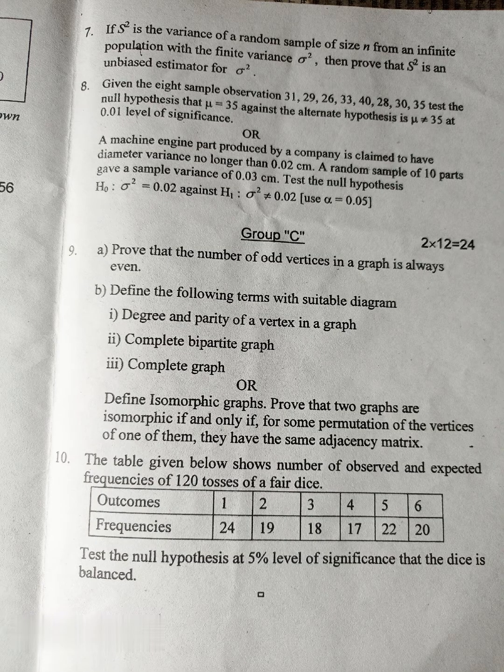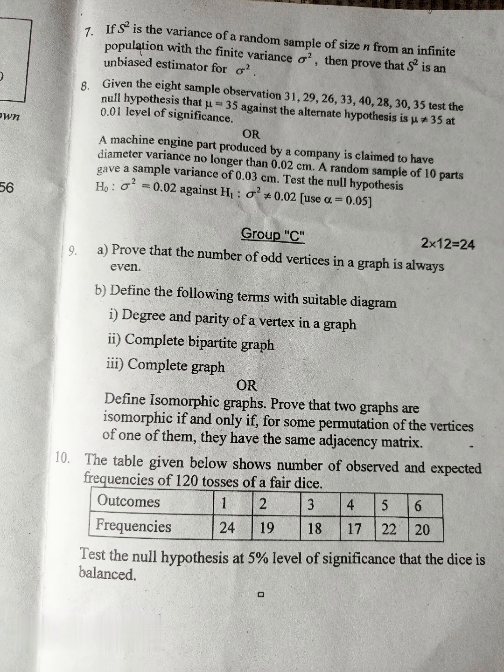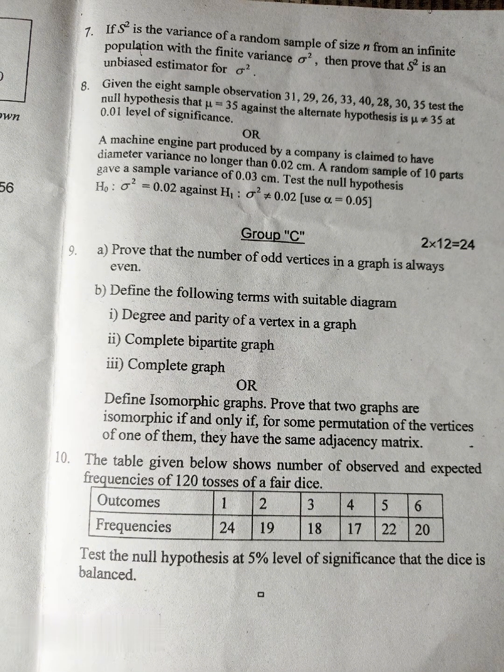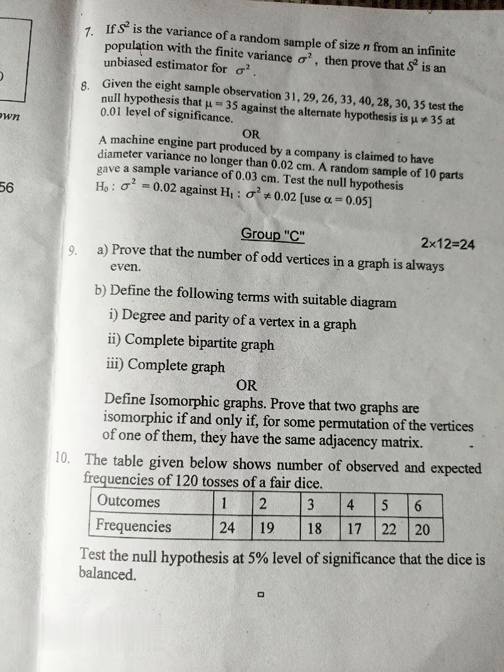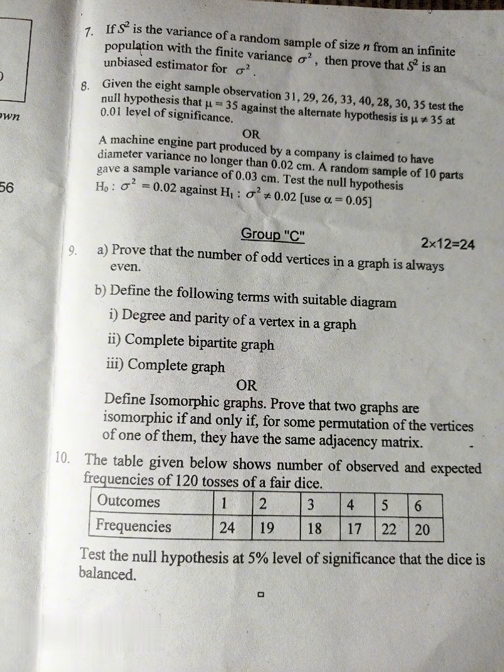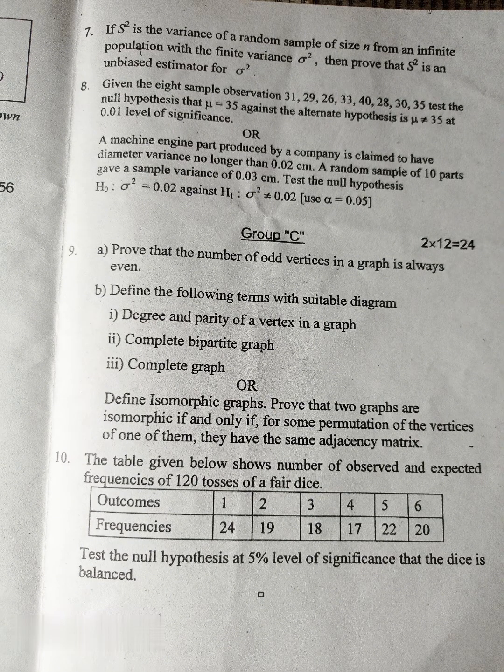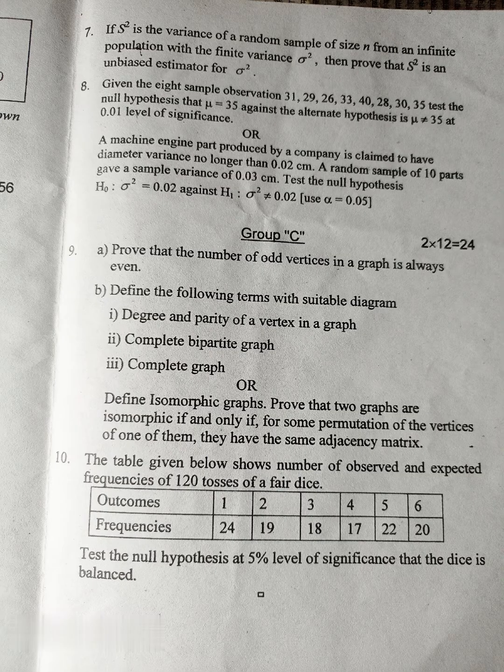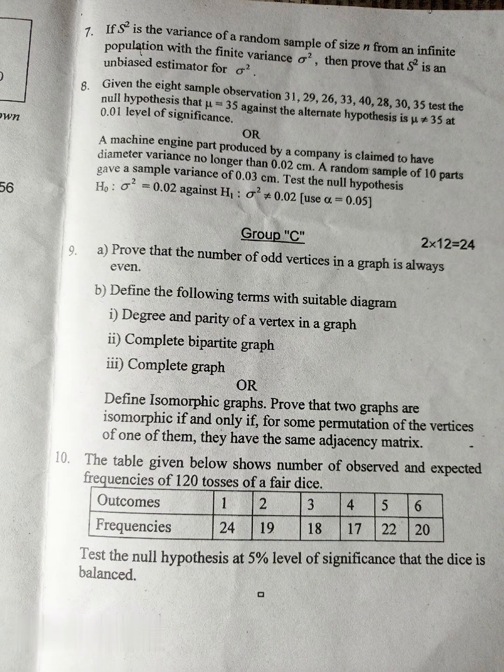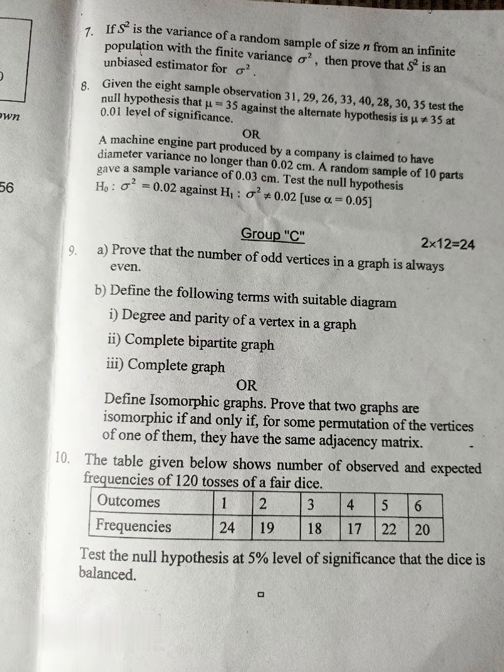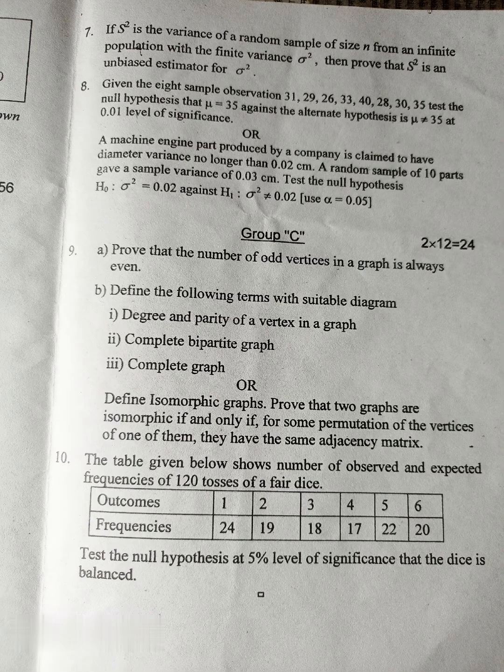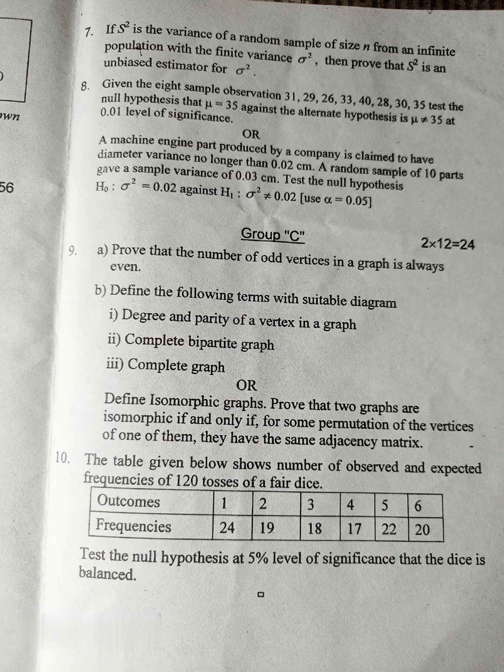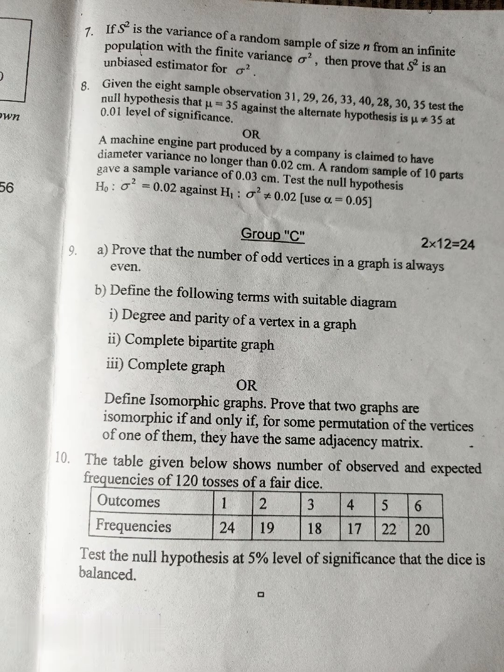A coin is tossed 500 times. Find the probability that the number of heads will not differ from 250 by 1. more than 10, 2. more than 30. Question number 7: If S square is the variance of a random sample of size n from an infinite population with the finite variance sigma square, then prove that S square is an unbiased estimator of sigma square. Question number 8: Given the 8 sample observations 31, 29, 26, 33, 40, 28, 30, 35, test the null hypothesis mu equal to 35 against the alternative hypothesis mu not equal to 35 at 0.01 level of significance, or...